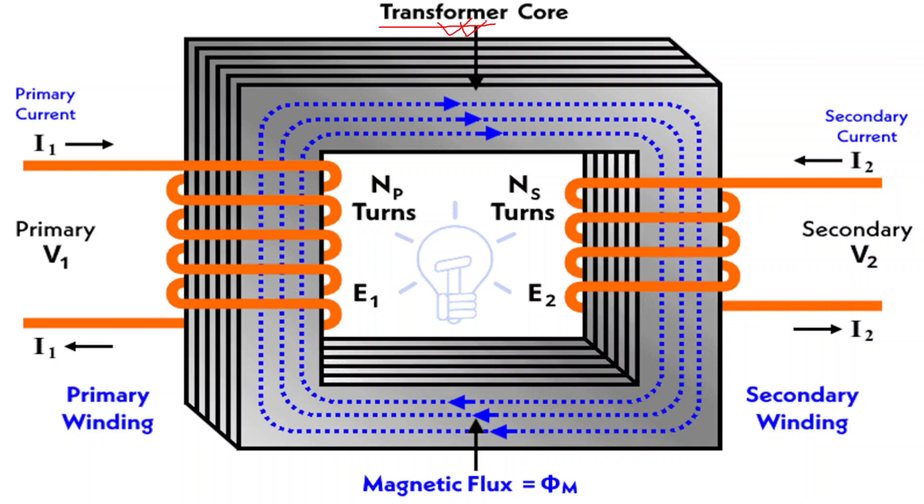There are some components of the transformer. The first one is the primary winding. This is the input side of the transformer where the voltage source is connected.